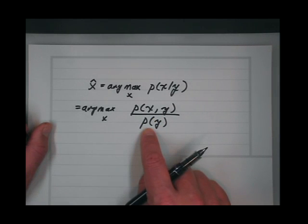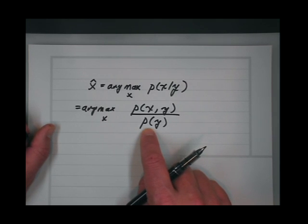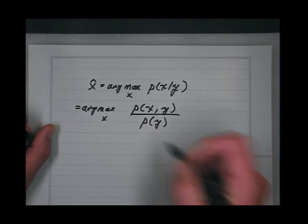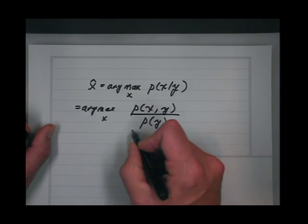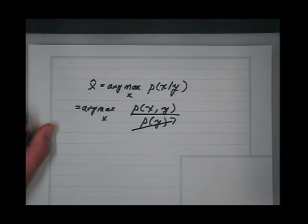So this thing — p of y — doesn't matter. If I'm solving an optimization problem and I multiply the cost function by any positive constant, it doesn't matter. So I can just get rid of it.